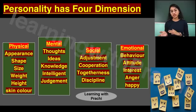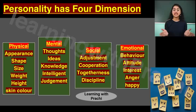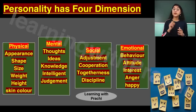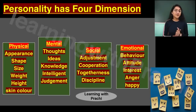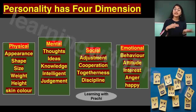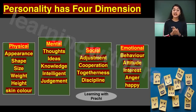Personality has four dimensions. If a question comes on this, you need to explain: physical, mental, social, and emotional. The first dimension is physical appearance — how a person looks, their shape, size, weight, height, whether they are thin or tall, and their skin color. All these things make up physical appearance.